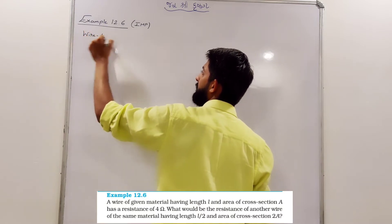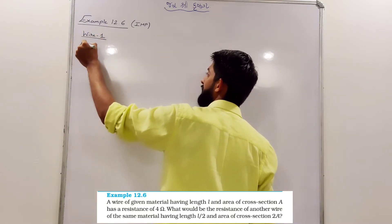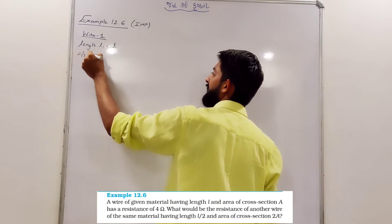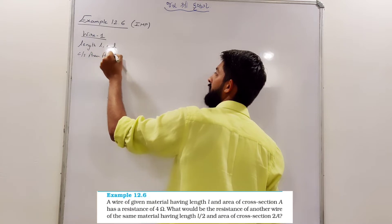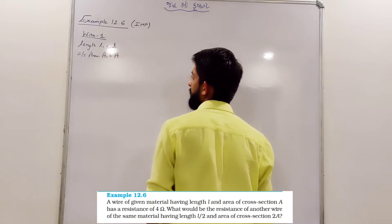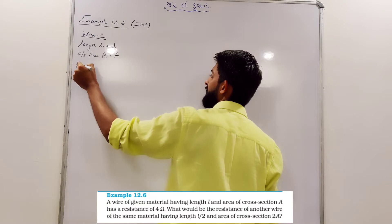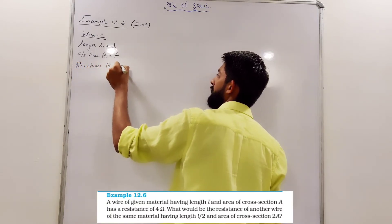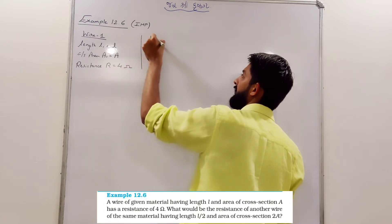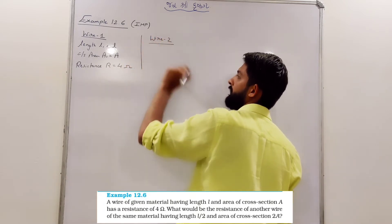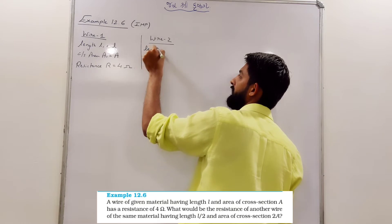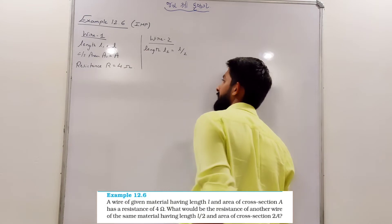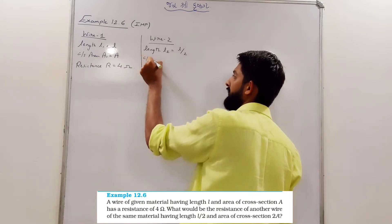the wire 1. Its length is L1. Its cross sectional area is A1, that is A.